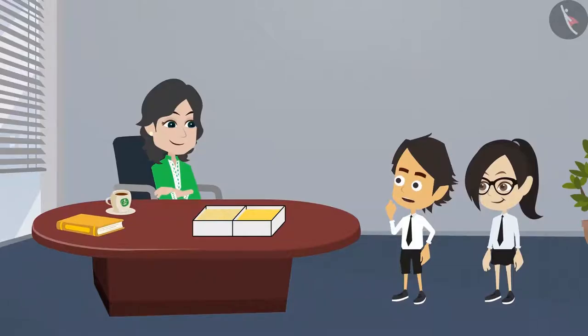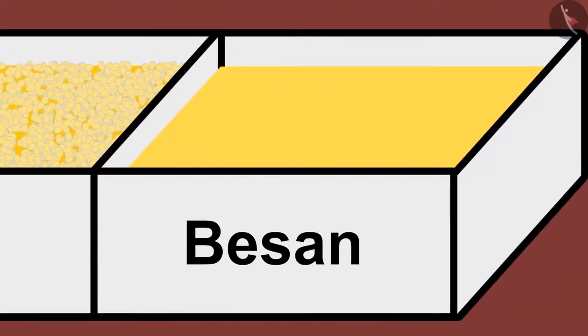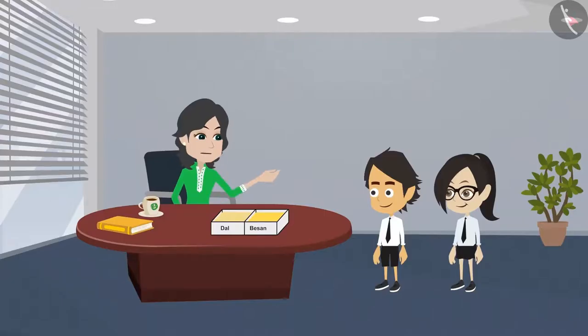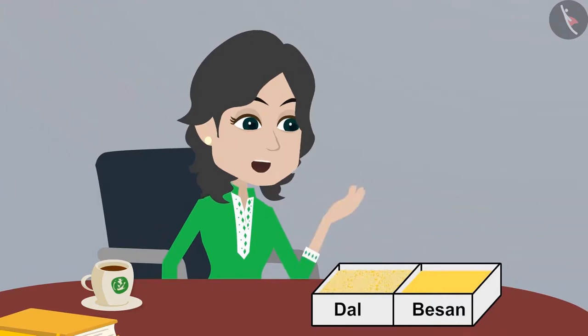What is there in these boxes? Dal and besan? Yes, dal and besan. Tell me, how will you divide dal and besan into two equal parts?